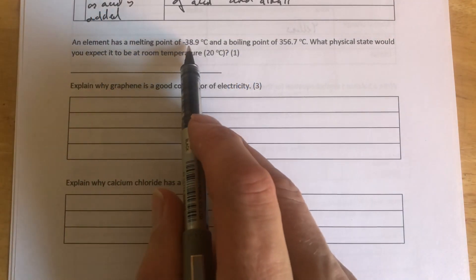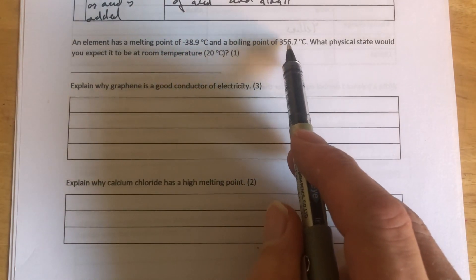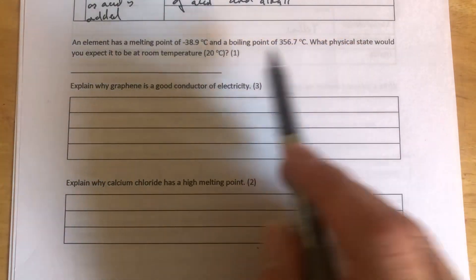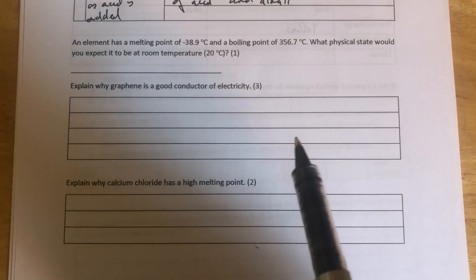An element has a melting point of minus 38.9 degrees centigrade and a boiling point of 356.7 degrees centigrade. What physical state would you expect it to be at room temperature? Room temperature is 20 degrees centigrade, it tells us there.